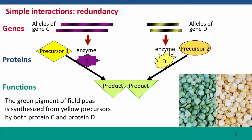First, redundancy. Here's a different kind of biochemical pathway where we have the same product being synthesized in two different ways. It can either be synthesized by the product of gene C — protein C, enzyme C — making the green product from precursor 1, or it can be synthesized by enzyme D encoded by gene D from precursor 2. These kinds of pathway effects are quite common, especially where genes have diverged after, for example, a gene duplication or they're members of the same gene family. They differ in the substrate they can use, but they produce the same product.